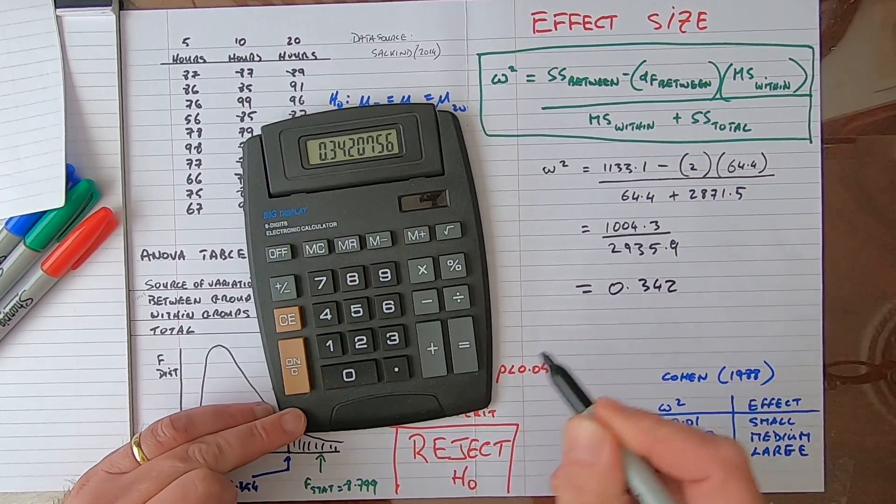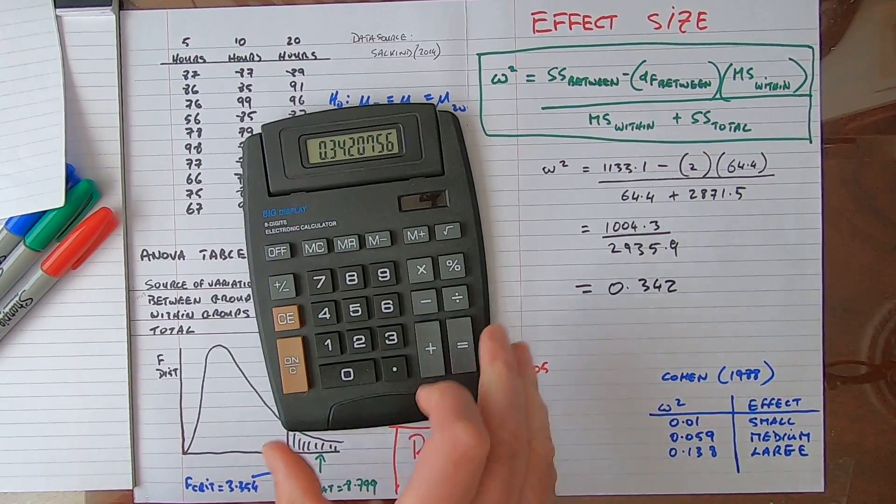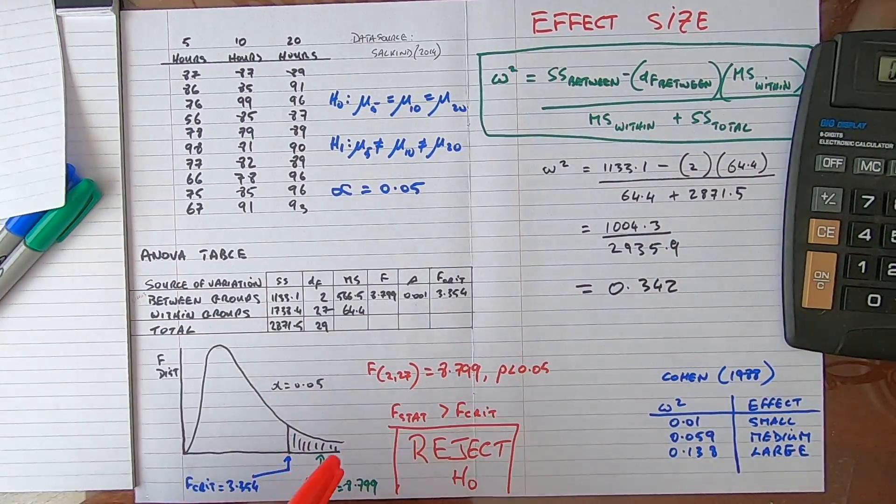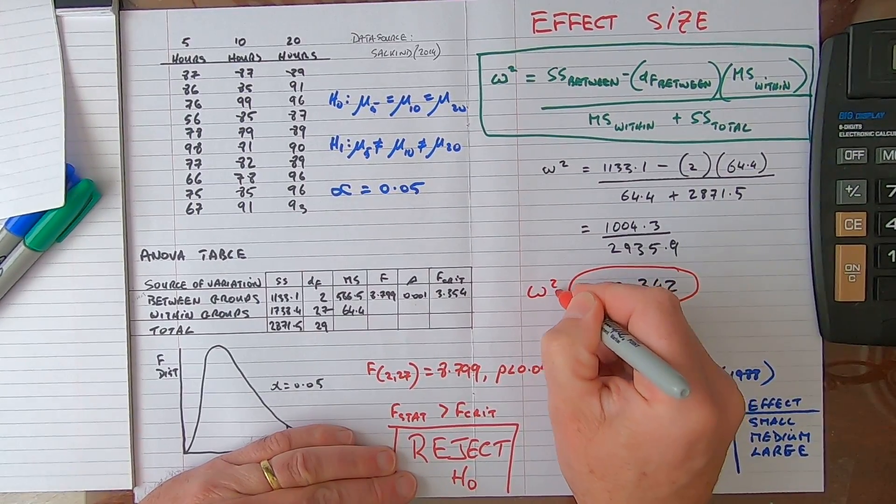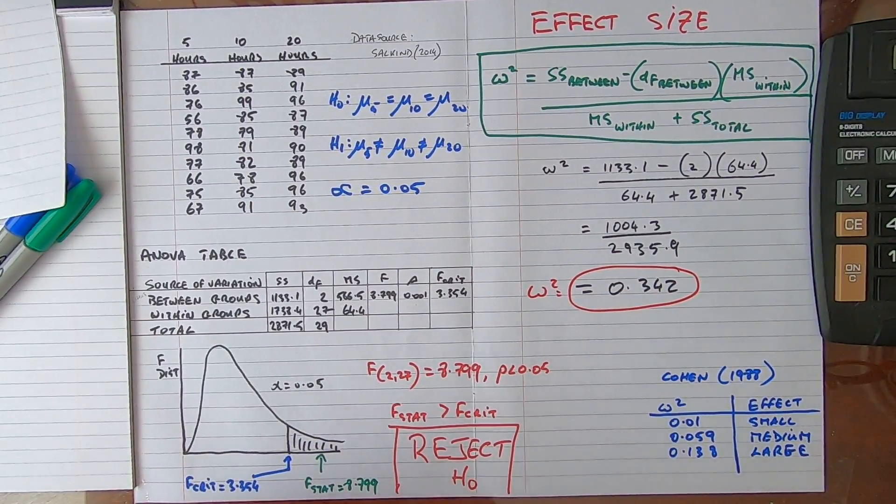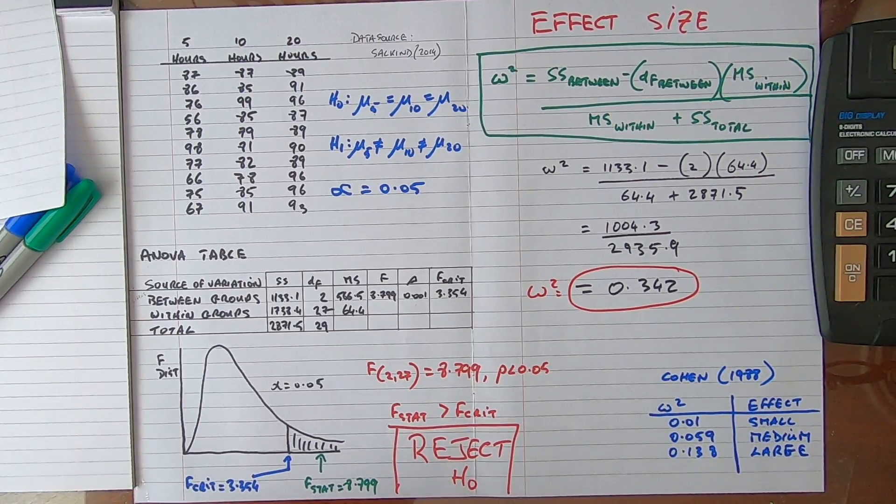Then 1004.3 divided by 2935.9 is equal to 0.342. I'll just take three decimal places there. So now what does this number mean? This is our omega squared value.